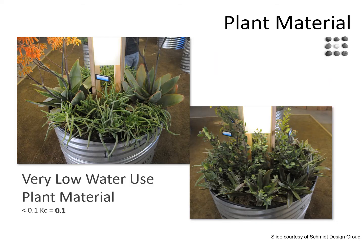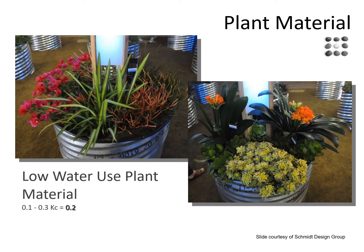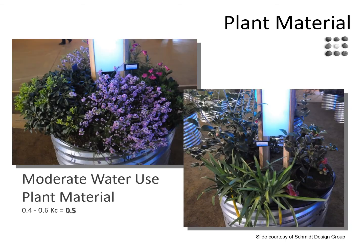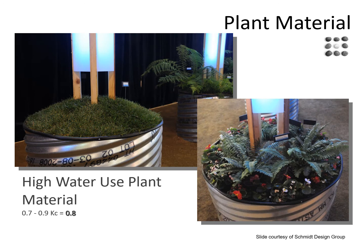Very low water use plant material includes some succulent strategies — they can be leafy and green, not dry and dusty and gray looking. Our low water use plant material includes some succulents and colorful plants. Then we have traditional moderate water use plant material, and our high water use material, again being turf and some of these big tropicals.